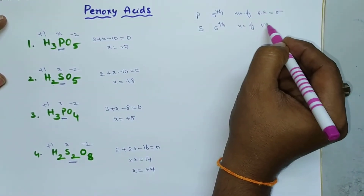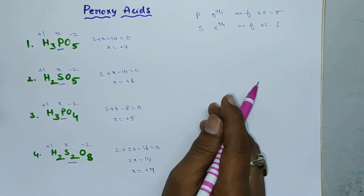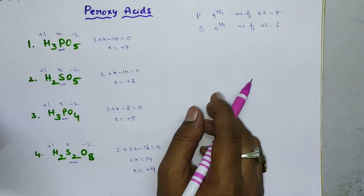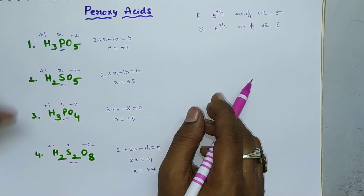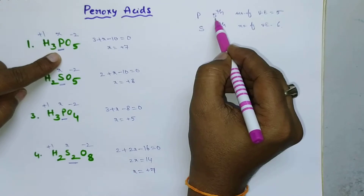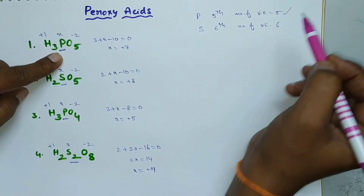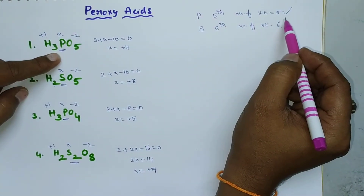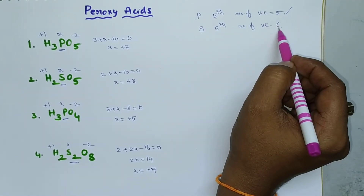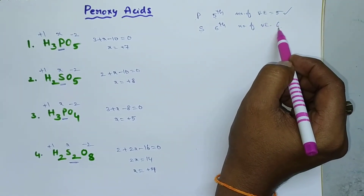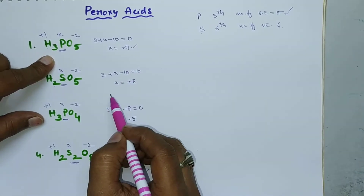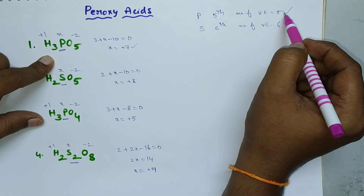An element exhibits its oxidation state either by losing or gaining electrons. Phosphorus has 5 valence electrons, so it can exhibit a maximum of +5 oxidation state. Sulfur has 6 valence electrons, so it can exhibit a maximum of +6 oxidation state. But here, phosphorus exhibits a +7 oxidation state, which is greater than the number of valence electrons.